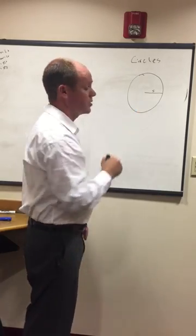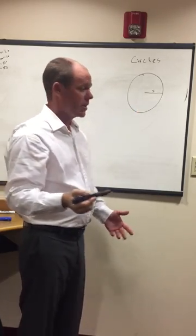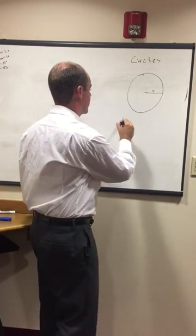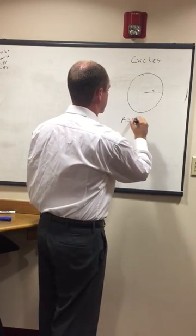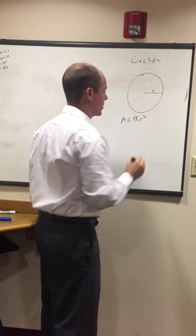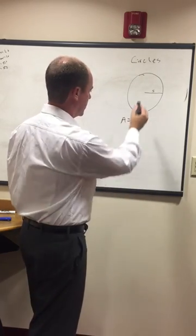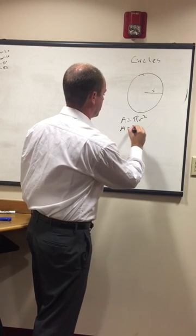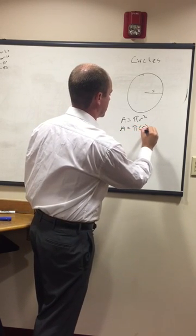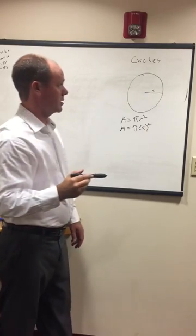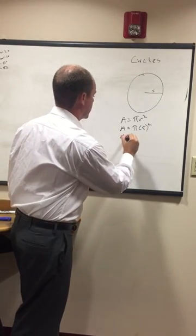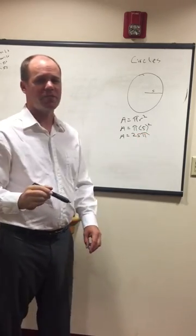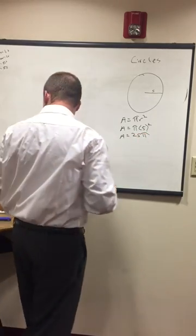And then also with this, they might ask you: what is the area of the circle given radius 5? We need to know that area equals pi r squared. So given that the radius is 5, area equals pi times 5 squared, and therefore area equals 25 pi. And that's how we would do that one.